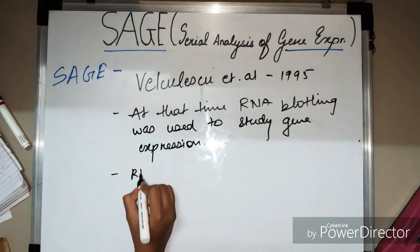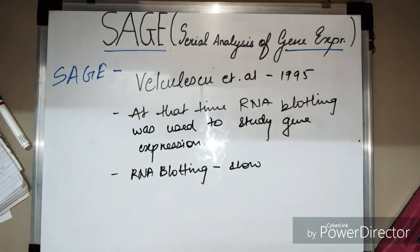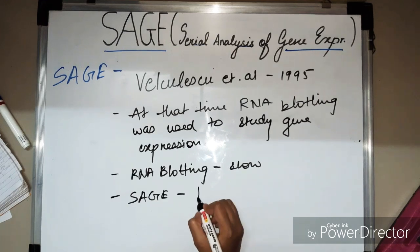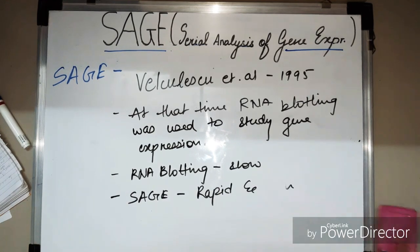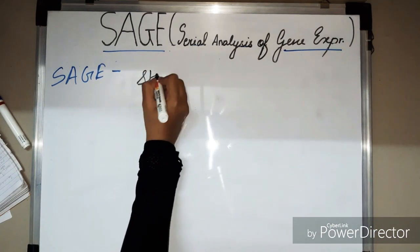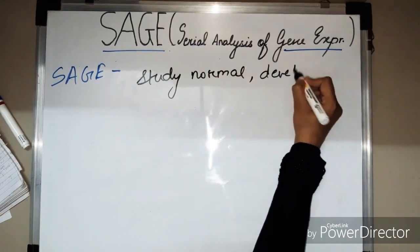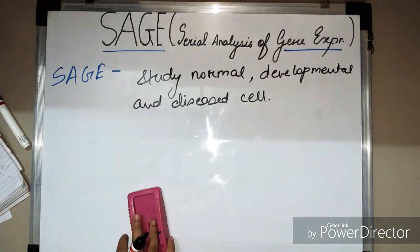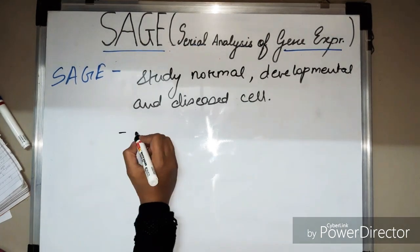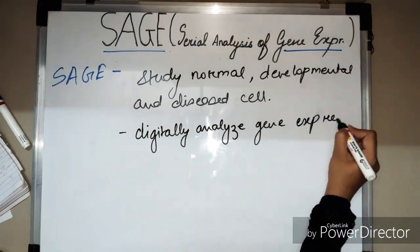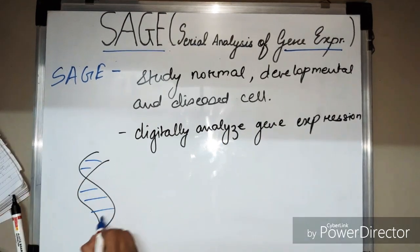RNA blotting techniques were slow, so scientists developed a new, more advanced technique that is more rapid than RNA blotting and is able to study gene expression in a small amount of time. SAGE allows us to digitally analyze gene expression — not only of a single gene but of a complete profile of a cell's gene expression — and to compare the gene expression of normal, developmental, and diseased cells.